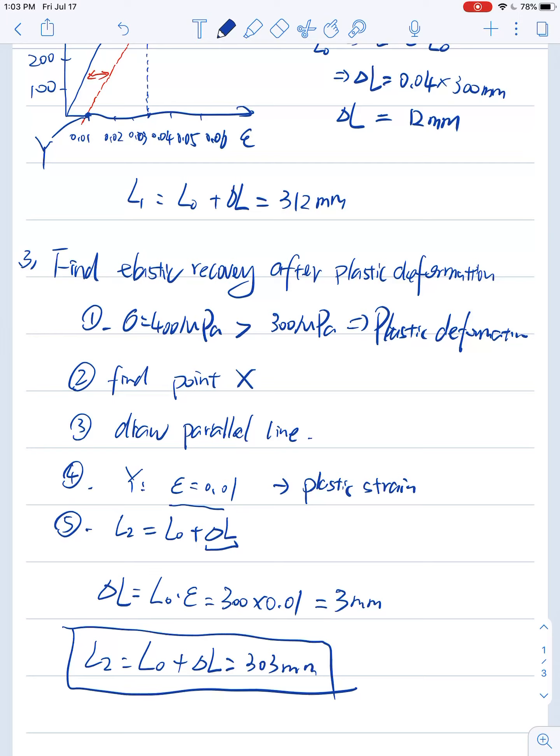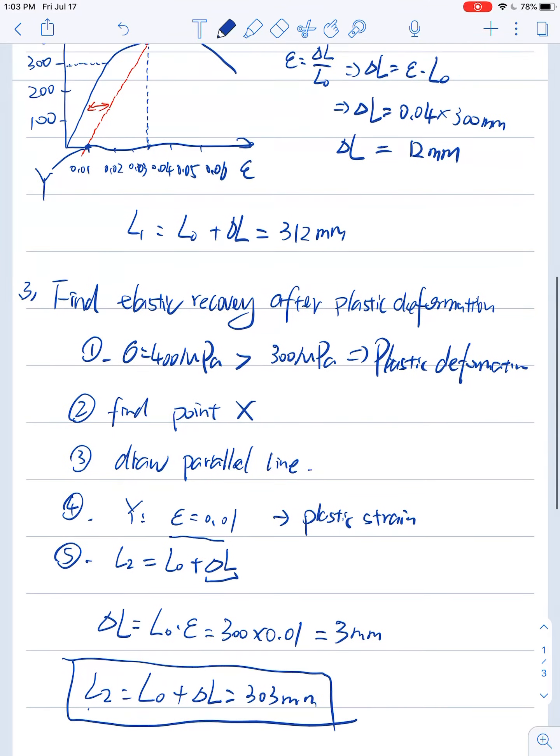And if you compare this L2 with L0, we have 3 mm of plastic deformation, or you can call it permanent deformation remaining in this specimen.